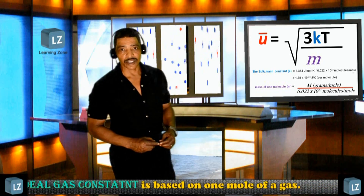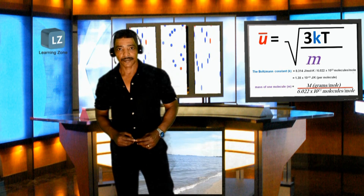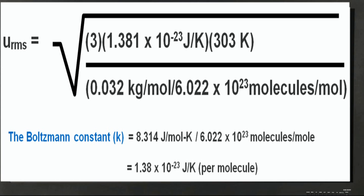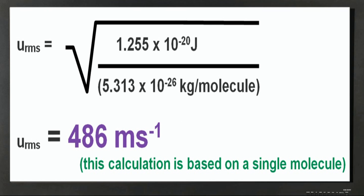Let's use the second version of the equation to recalculate the root mean square speed of oxygen gas at 30 degrees Celsius. Inserting the information into the equation generates the following, where RMS speed is equal to the square root of 3 times Boltzmann's constant times the absolute or Kelvin temperature divided by the mass of one molecule of oxygen gas. Simplifying, RMS speed equals the square root of 1.255 times 10 to the minus 20 joules divided by 5.313 times 10 to the minus 26 kg per molecule. Solving for root mean square speed, we get 486 meters per second.